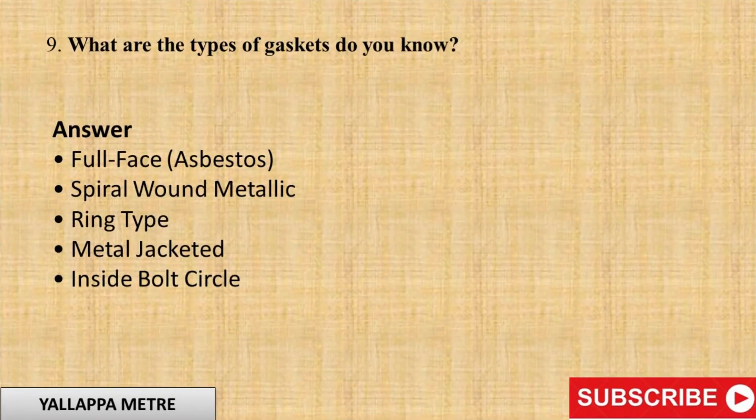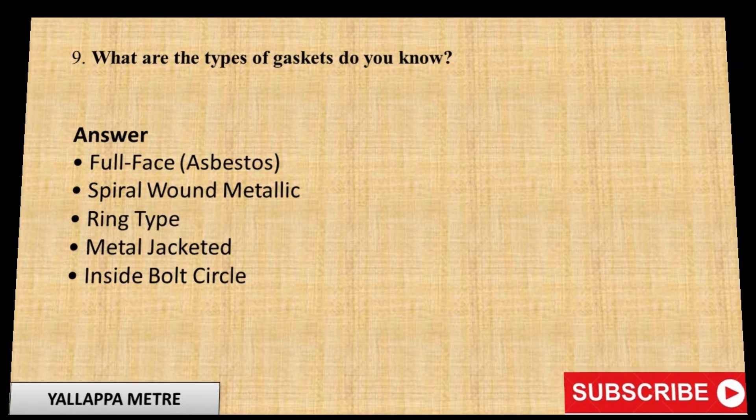Question 9: What are the types of gaskets you know? Answer: Full face, asbestos, spiral wound metallic, ring type, metal jacketed, inside bolt circle.